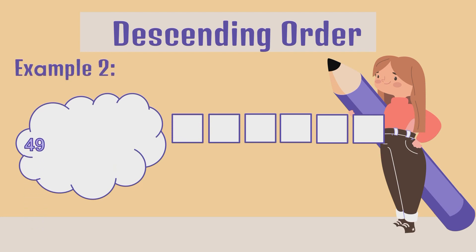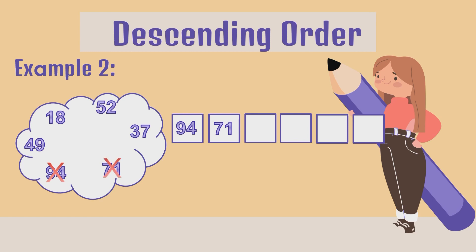Example 2: We have 49, 18, 52, 37, 71, and 94. Which number is the biggest? 94. Very good. Cross out 94. Next is 71. Cross out 71. Next we have 52. Cross out 52. Next number is 49. Cross out 49. Next is 37. Cross out 37. And the smallest number is 18.